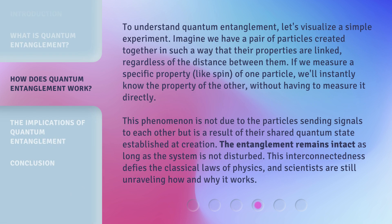To understand quantum entanglement, let's visualize a simple experiment. Imagine we have a pair of particles created together in such a way that their properties are linked, regardless of the distance between them. If we measure a specific property, like spin, of one particle, we'll instantly know the property of the other, without having to measure it directly. This phenomenon is not due to the particles sending signals to each other, but is a result of their shared quantum state established at creation. The entanglement remains intact as long as the system is not disturbed. This interconnectedness defies the classical laws of physics, and scientists are still unraveling how and why it works.